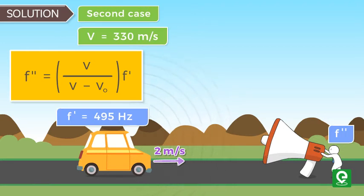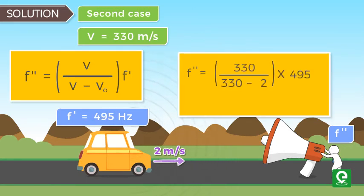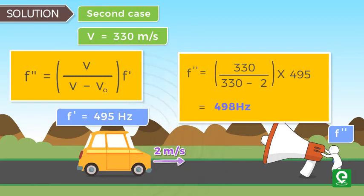Substituting values of v, v₀, and f', we get f'' = 330/(330 - 2) × 495 = 498 Hz.